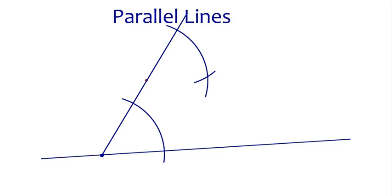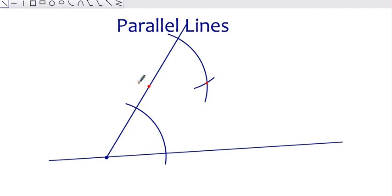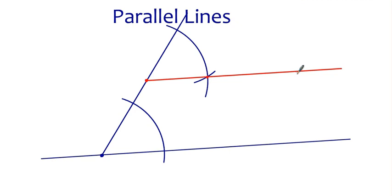Okay, so with that, we now have a point that we can connect to our given point using our straight line tool. And the line that results should be parallel to the original line. And that's how to construct a parallel line using a compass.